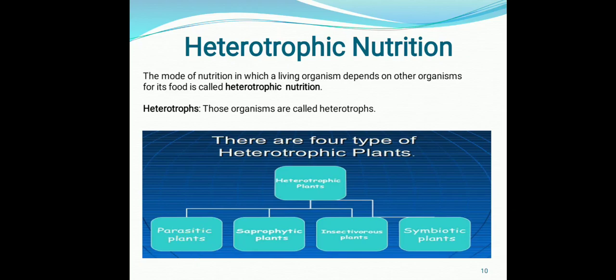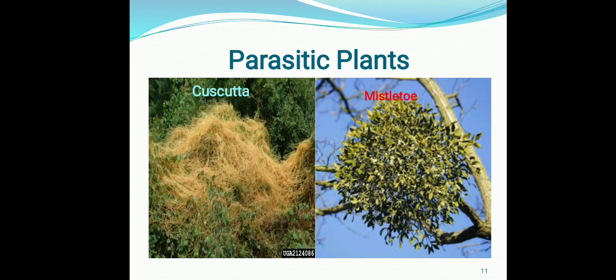First, we are going to look at parasitic plants. Those plants which reside on other plants for their nutrition requirement are called parasitic plants. Basically, there is a host and a parasite. The host is the plant which provides nutrition to the parasite, and the parasite is the plant which absorbs nutrition from the host. The interaction between the host and parasite is known as the parasitic mode of nutrition. Parasitic plants are non-green plants which are not capable of making their own food, so for such requirements they depend on their host.